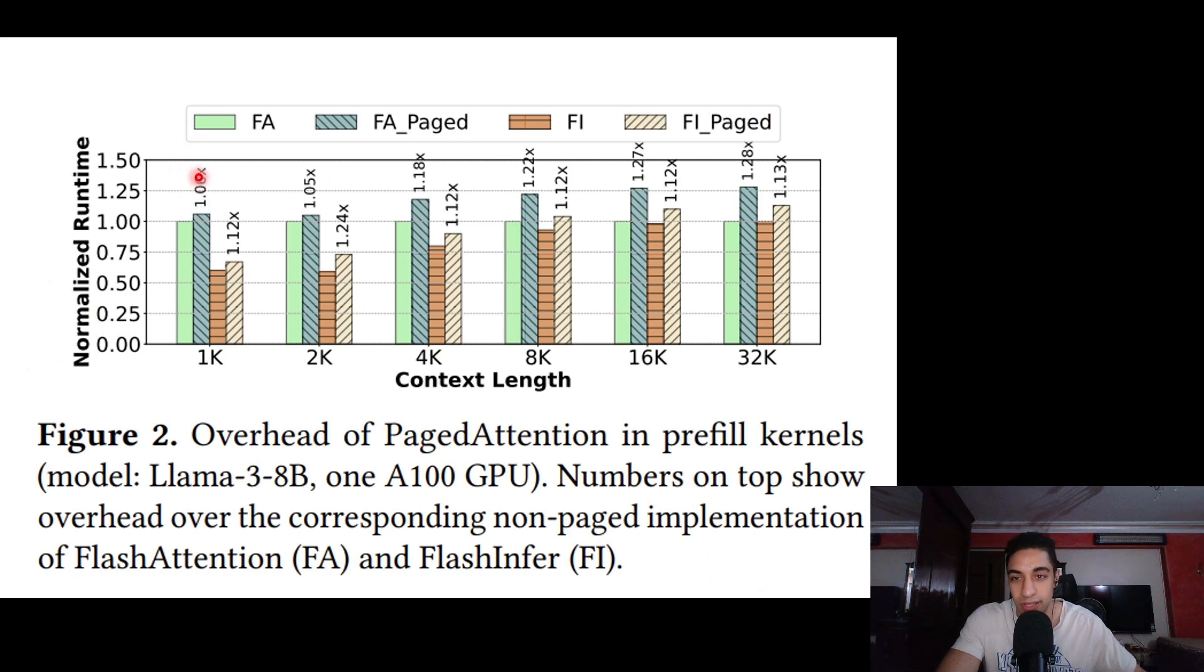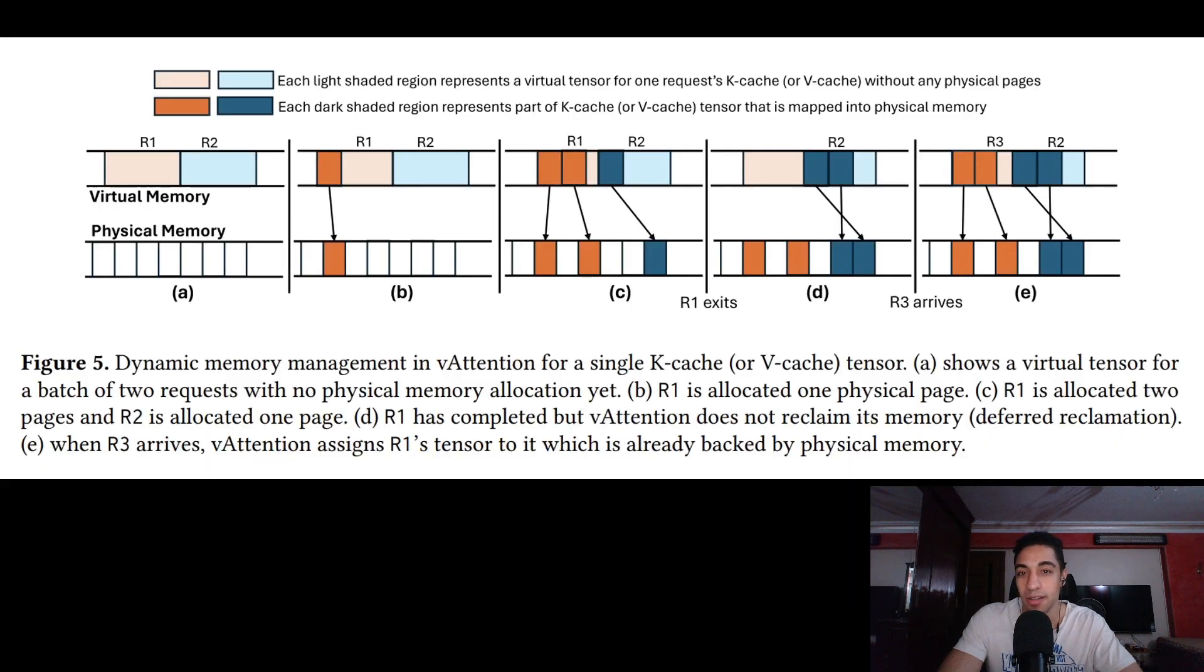But this comes with an overhead. Paging takes an overhead between 6 and 27 percent due to memory management. A recent technique avoids this overhead by doing deferred reclamation. The idea behind it is you can reuse the same memory you allocated for previously ended requests to service the new requests, and you would have the KV cache contiguous in memory so you don't need the memory management step which contributes to the overhead.